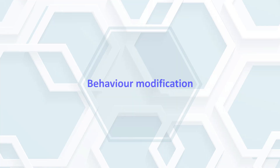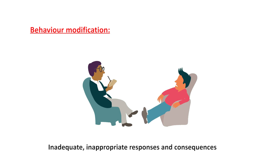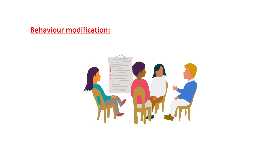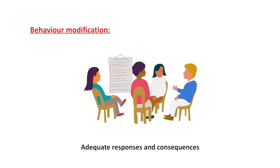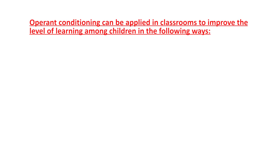Now, how do you apply operant conditioning to a real life setting? The major applications of operant conditioning in daily life include, first, behavior modification. Researchers consider that many emotional and behavioral problems are caused by inadequate or inappropriate responses and consequences. Operant conditioning gains significance by inducing a change towards the desired behavior with adequate responses and consequences.